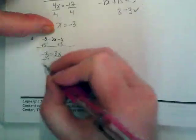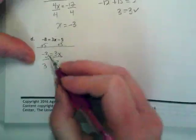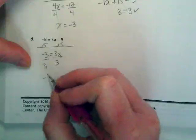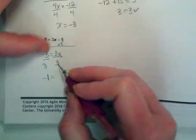If I divide both sides by 3, negative 3 divided by positive 3 is negative 1. 3 divided by 3 is 1, leaving us with just X.